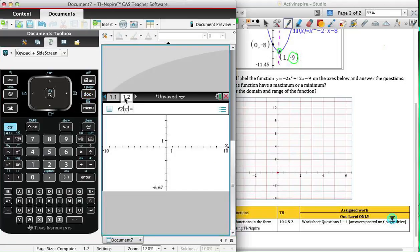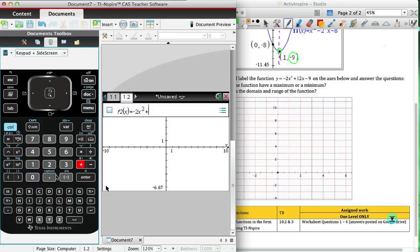I'm going to add a graphing page so that I can have a new set of axes in order to graph my new function. I'm going to type in -2x² plus 12x minus 9, using the negative sign this time. Hit enter.